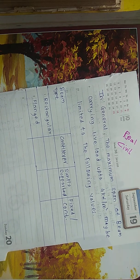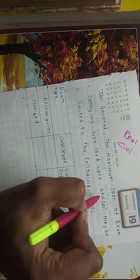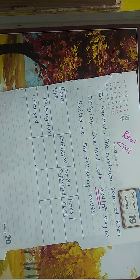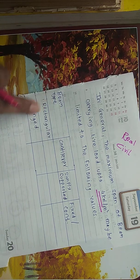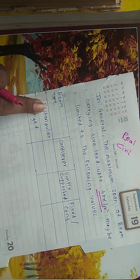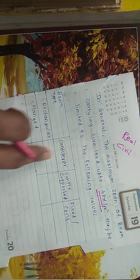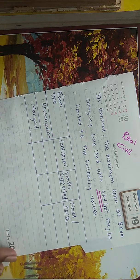In general, the maximum span of a beam carrying live load up to 4 kN per meter square may be limited to the following values. Live load should be up to 4 kN per meter square. Then, depending upon the beam type — whether it is rectangular or flanged — they have some criteria.